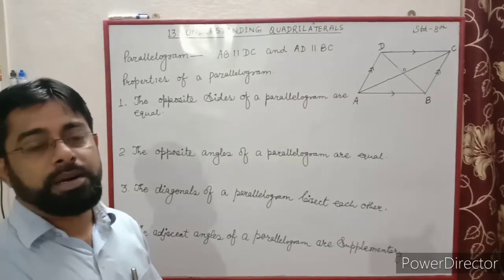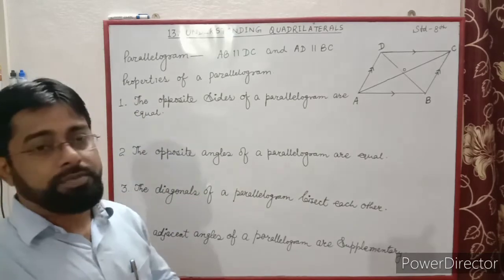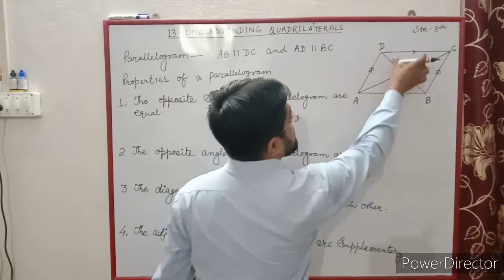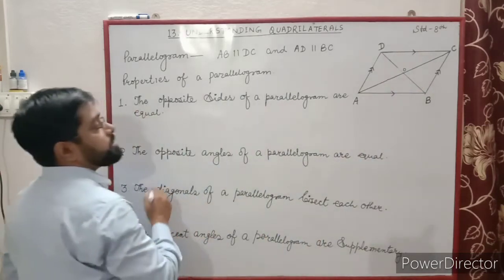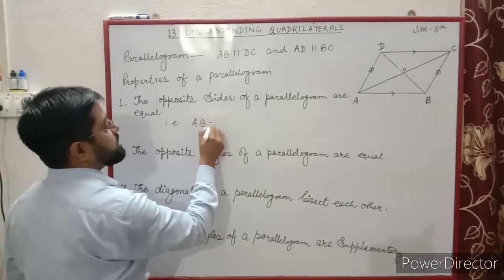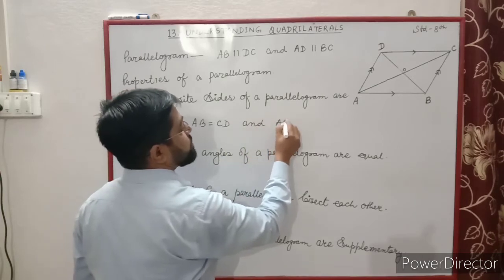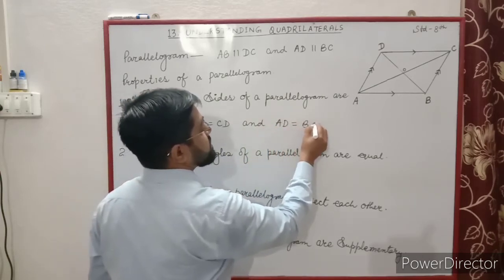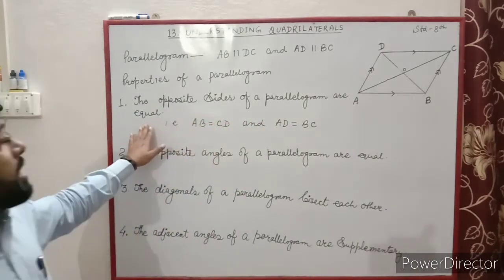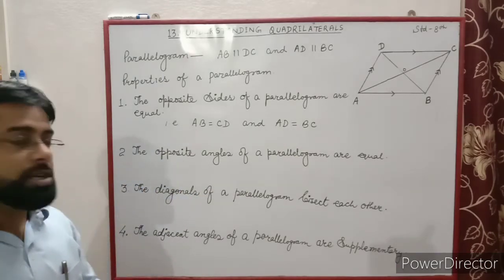Now, properties of a parallelogram. The first property: the opposite sides of a parallelogram are equal. From the figure, AB is equal to CD and AD is equal to BC. The second property: the opposite angles of a parallelogram are equal. That is, angle A is equal to angle C, and angle B is equal to angle D.